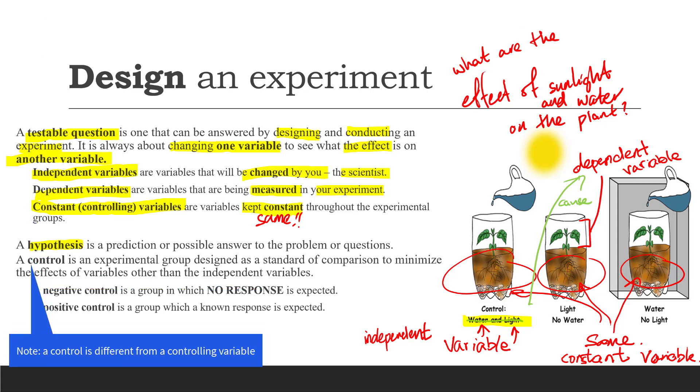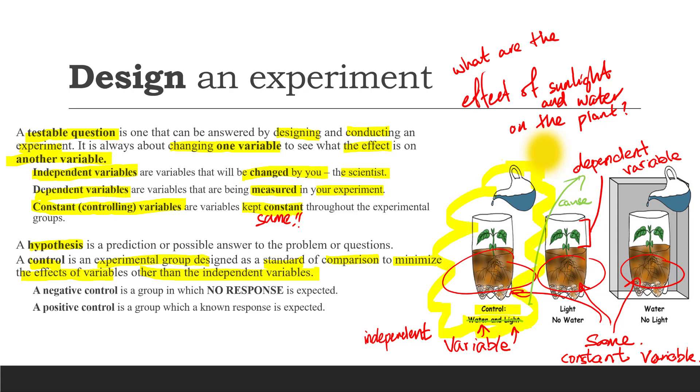Notice that it is different from a controlling variable. A control is a standard of comparison to minimize the effects of variables other than the independent variable. In this experiment, a control would be a plant which is provided with water and sunlight, because this is the group that other treatment groups will be compared to after the experiment. A negative control is a group in which no response is expected. Positive control is a group in which a known response is expected.